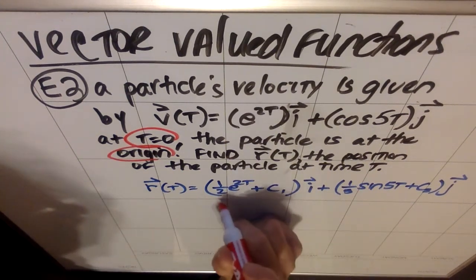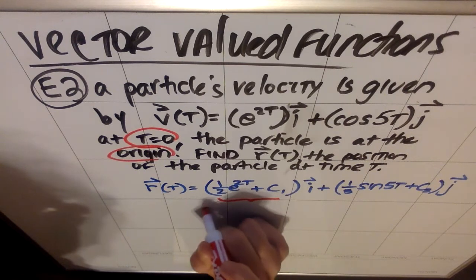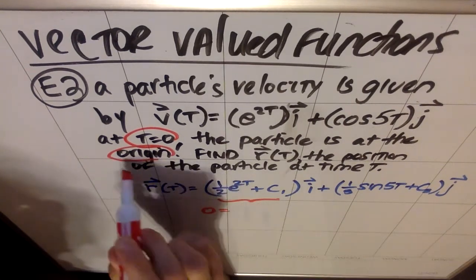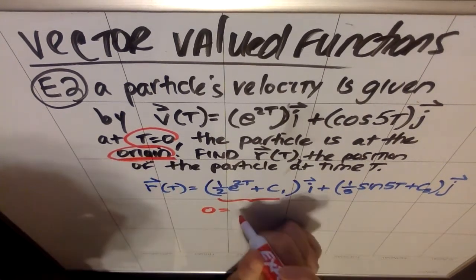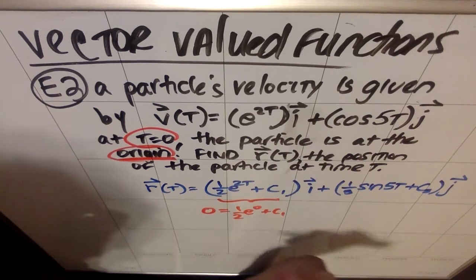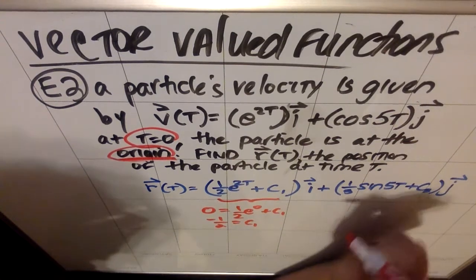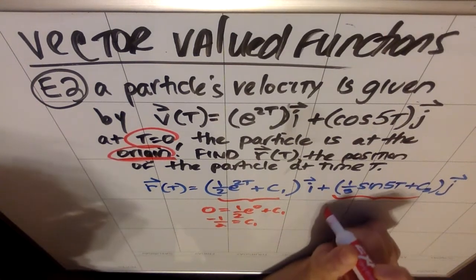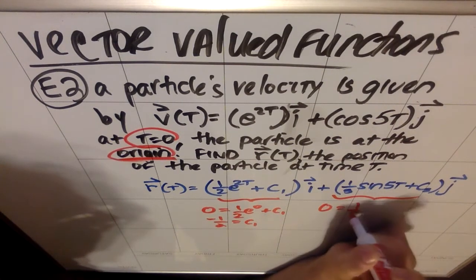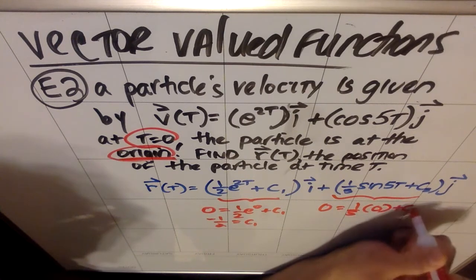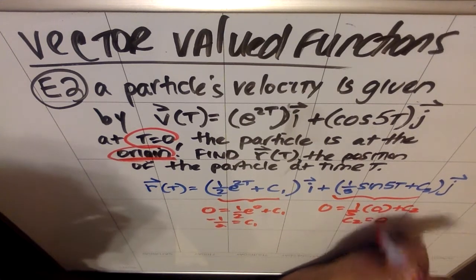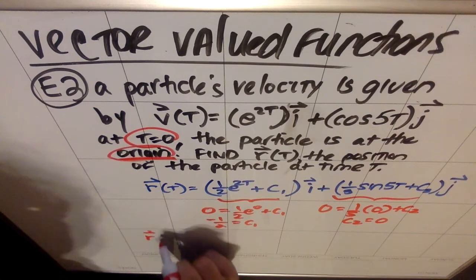So in order to find this c, essentially, I need to realize that this whole thing is going to come out as a 0 because the origin has an x-coordinate of 0. When I plug in 1 half e to the 0 plus c sub 1, I end up getting a negative 1 half as my c sub 1. When I do the same thing over here, I get a 0 equals a 1 fifth times a 0 plus c sub 2, and my c sub 2 just turns out to be a 0.